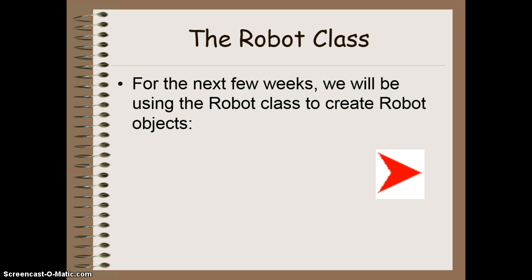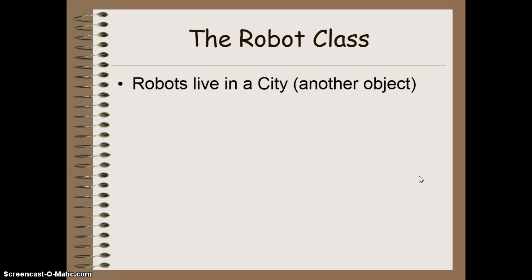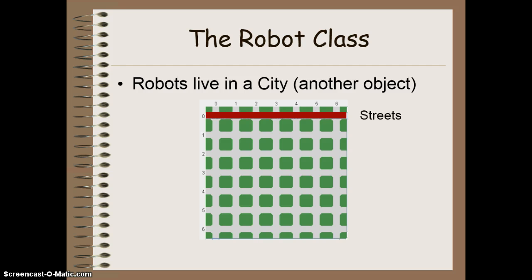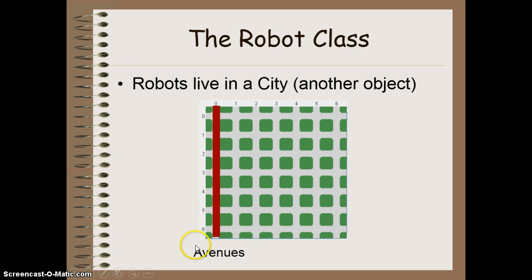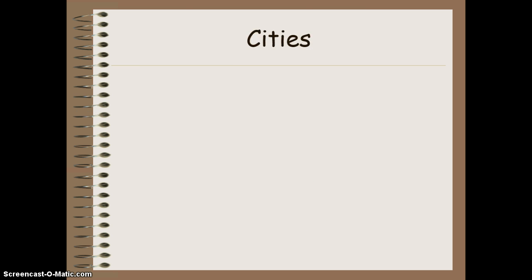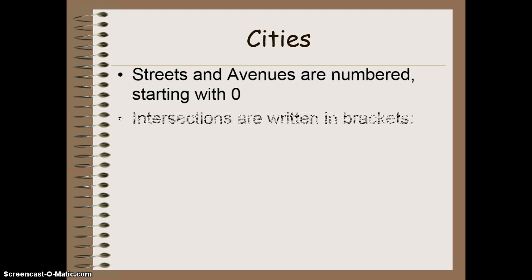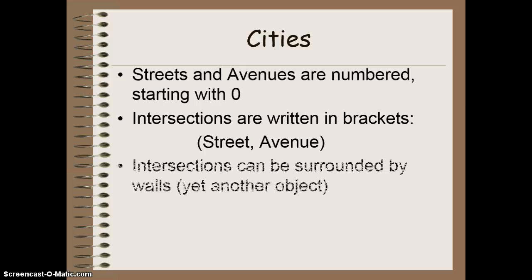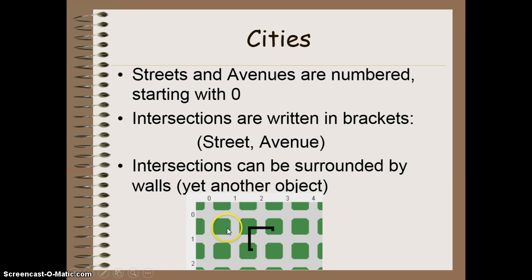In this class we're going to be working with the robot class, creating robot objects. Robots need to live in a city, which is itself another object. A city has streets which run horizontally and avenues which run vertically. I typically remember this because the letter A points up and V points down, so an avenue goes up and down. Wherever an avenue crosses a street, we have what's called an intersection. Streets and avenues in a city are numbered starting with zero, and all intersections are identified by writing their address in brackets — street followed by the avenue. Intersections can be surrounded by walls, which are also objects.